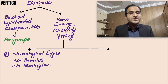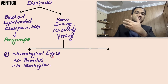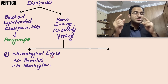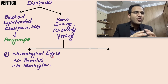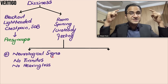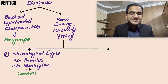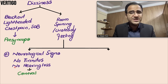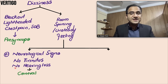Once you have diagnosed vertigo, determine whether the patient has any neurological findings. The patient might have weakness of one side of the body, diplopia, dysphagia, or dysmetria with uncoordinated movements, or abnormal gait. These neurological findings point toward the brain rather than the ear, indicating central vertigo. Central vertigo is more concerning than peripheral vertigo, and is associated with no tinnitus and no hearing loss because nothing is wrong with the ear.